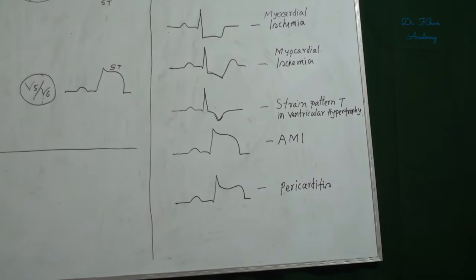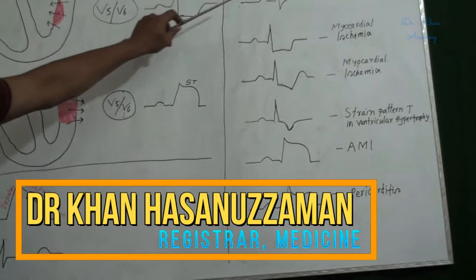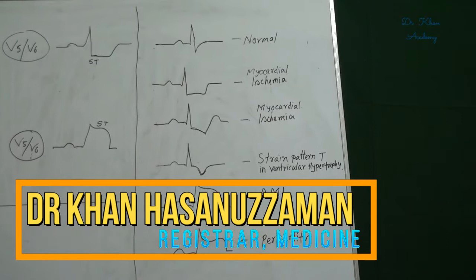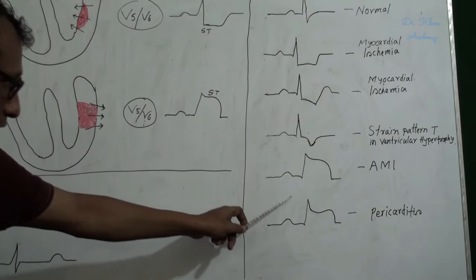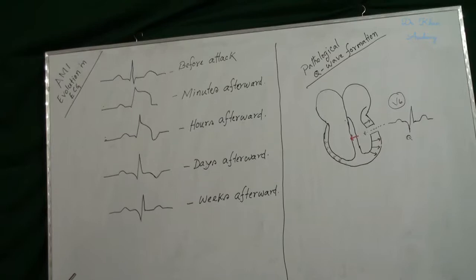These are the ST segment depressions. Last two figures show ST segment elevation. When ST segment elevation and convexity faces upwards, this indicates acute myocardial infarctions. But when concavity faces upwards, it indicates pericarditis.